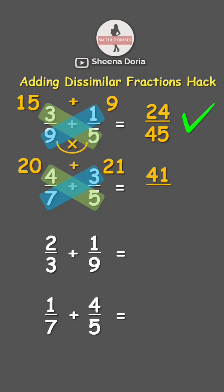Then multiply the denominators: seven times five is thirty-five. The answer is forty-one over thirty-five.